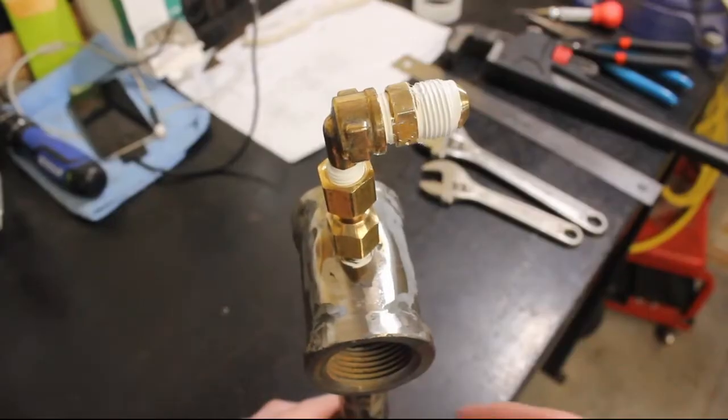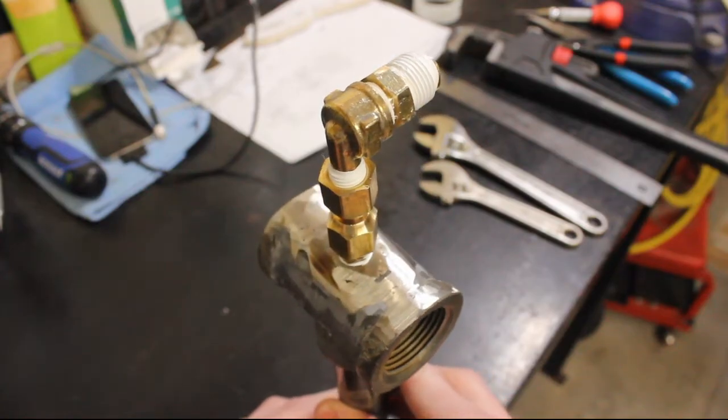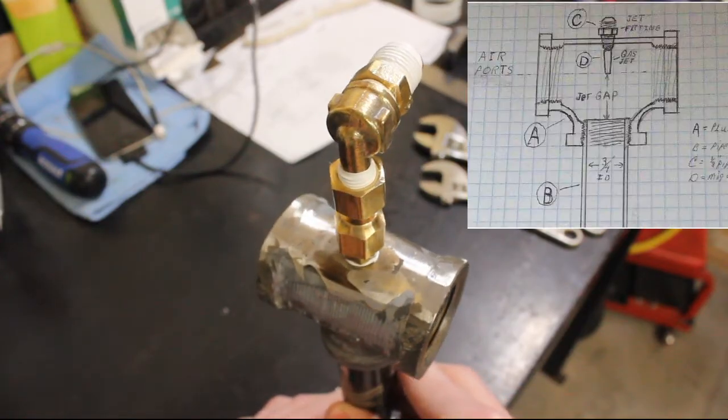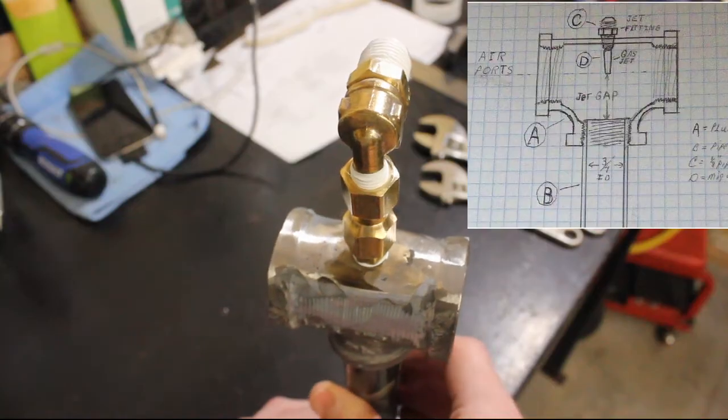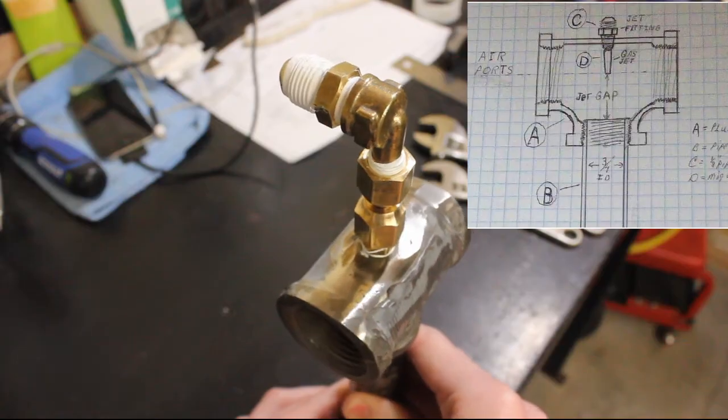Today we're going to be building what is known as the Frosty T Venturi burner. This method of construction was pioneered by a gentleman named Frosty on the Knife Dog message forums. A link to his plans can be found in the description below.